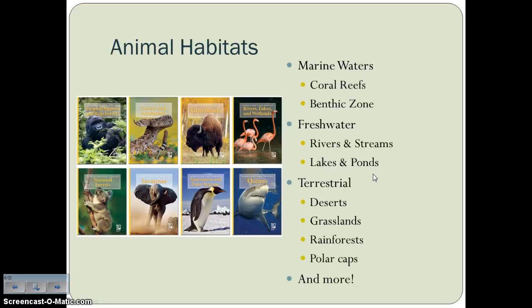Because animals are so diverse, they can be found pretty much anywhere on Earth. They can be found in marine water and salt waters — all the way from the warm coral reefs down to the very dark benthic zone. They can be found in freshwater rivers and streams, lakes and ponds, and even in wetlands. And of course, they're found in our terrestrial biome environments: deserts, grasslands, forests, polar caps, and even more.